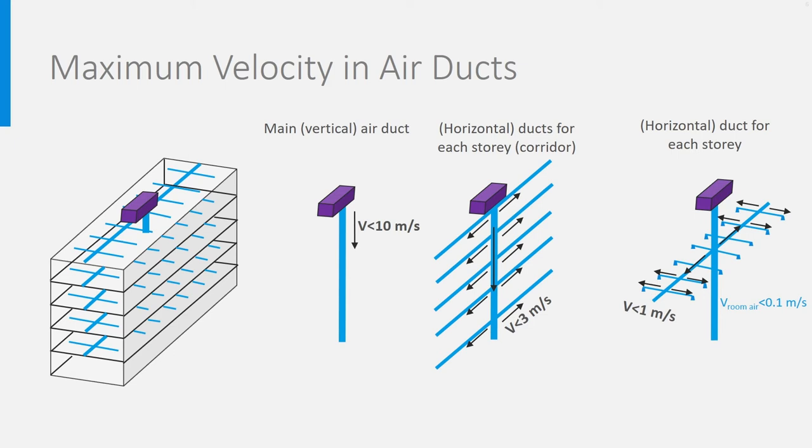How to size ducts? Next to the volume flow rates of air to be transported, we need to account for the velocity of the air flows. The higher the velocity, the more noise and resonance will be produced by the air in the ducts. And, as you may have learned in another course, noise is an important parameter of indoor environmental quality. Additionally, the higher the velocity, the higher the pressure losses. When the pressure losses are high, the power of the fan increases, causing more energy use.